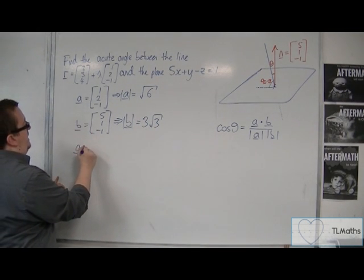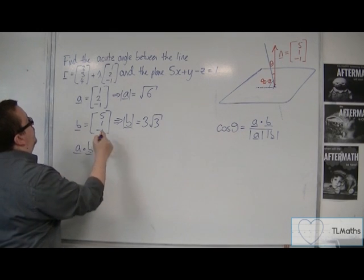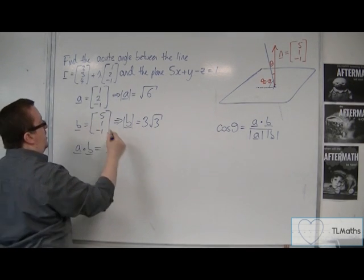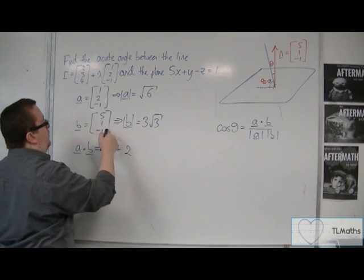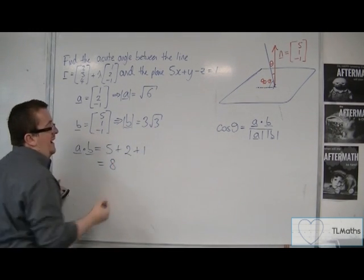And we've also got a dot b, which is 1 times 5 plus 2 times 1 plus minus 1 times minus 1. And that's going to get me 8.